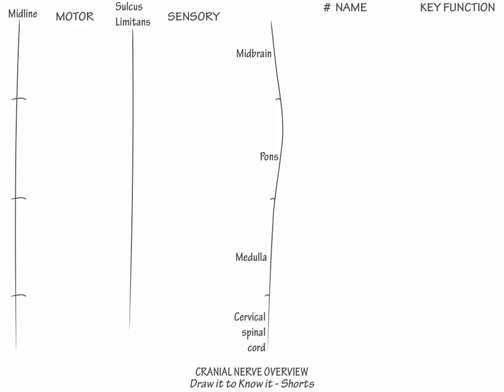First, indicate that rostral to the brain stem lies cranial nerve 1, the olfactory nerve, which detects smell, and cranial nerve 2, the optic nerve, which is involved in vision.